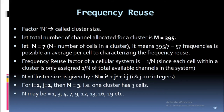Factor n is called the cluster size. If the total number of channels allocated for a cluster is m = 395 and n = 7 (number of cells in a cluster), then 395/7 = 57 frequencies per cell on average. The frequency reuse factor of a cellular system equals 1/n, since each cell within a cluster is only assigned 1/n of the total available channels. The cluster size n is given by: n = i² + j² + i·j, where i and j are non-negative integers. For i = 1, j = 1, then n = 3, meaning one cluster has 3 cells. Valid values of n may be 1, 3, 4, 7, 9, 12, 13, 16, 19, etc.